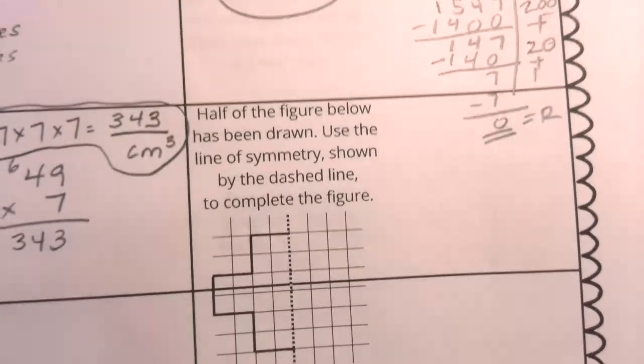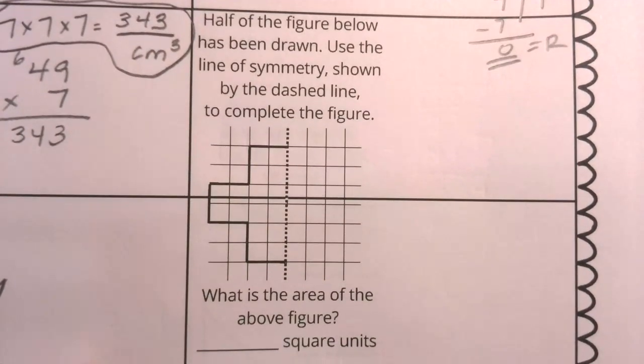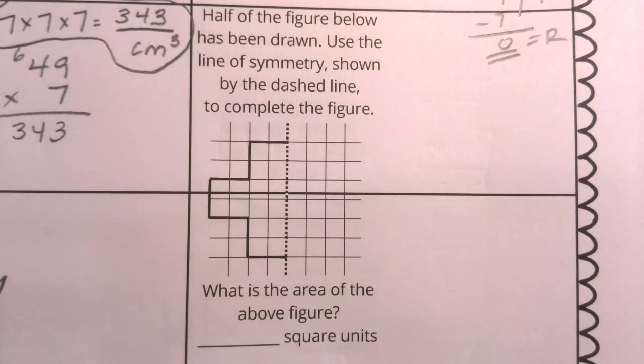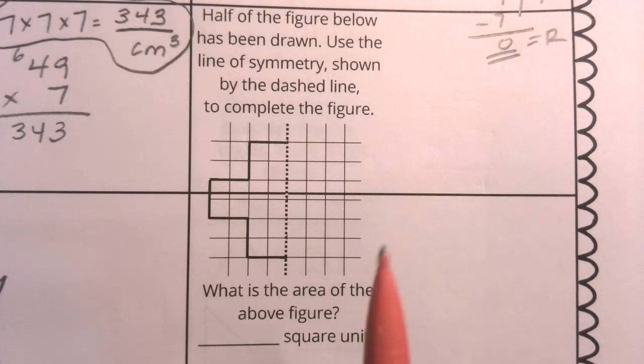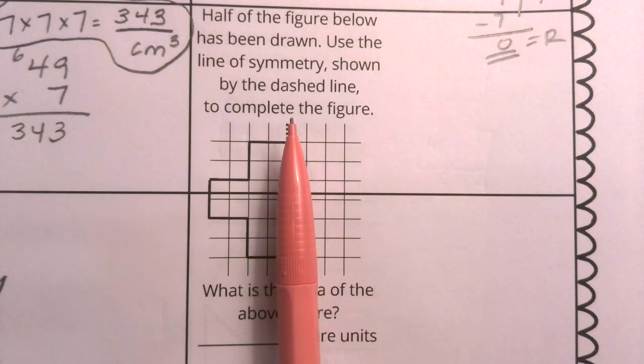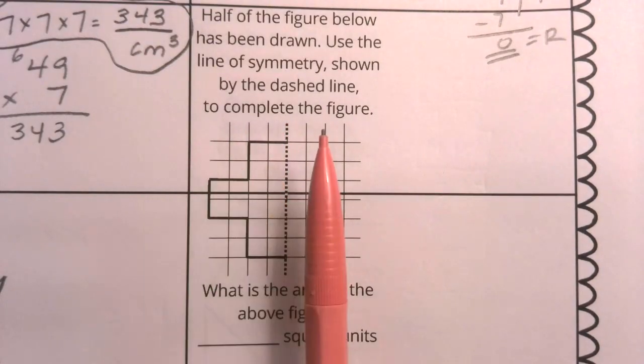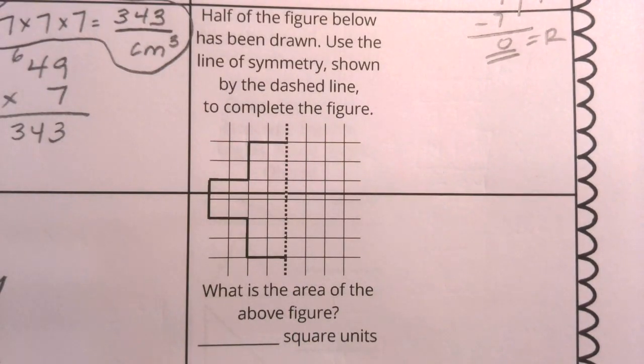Our last question today, boys and girls, helps us reflect back on symmetry. Half of the figure below has been drawn. Use the line of symmetry shown by the dashed line to complete the figure. So we're imagining this line is like a mirror. We want to see this side and this side being precisely, exactly the same.